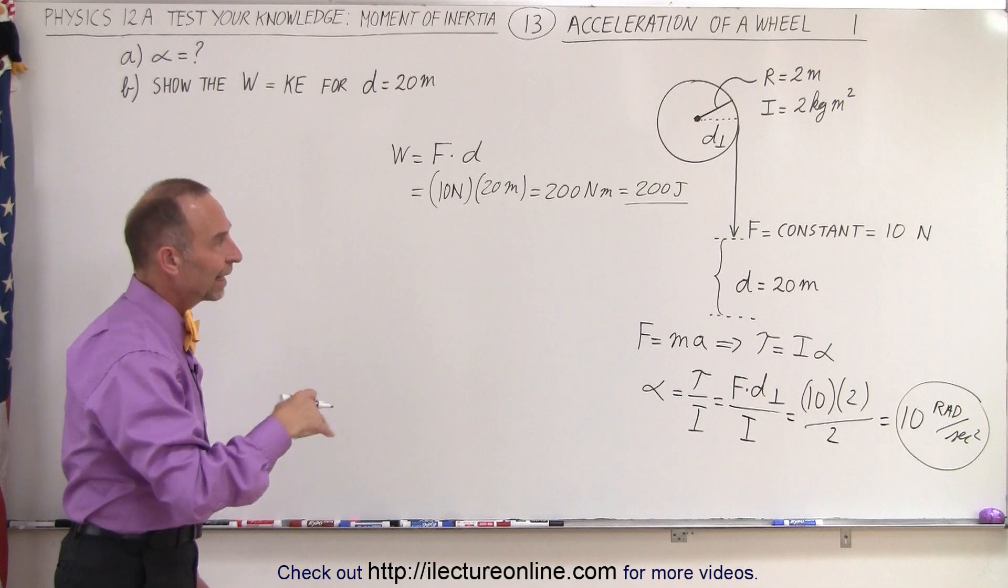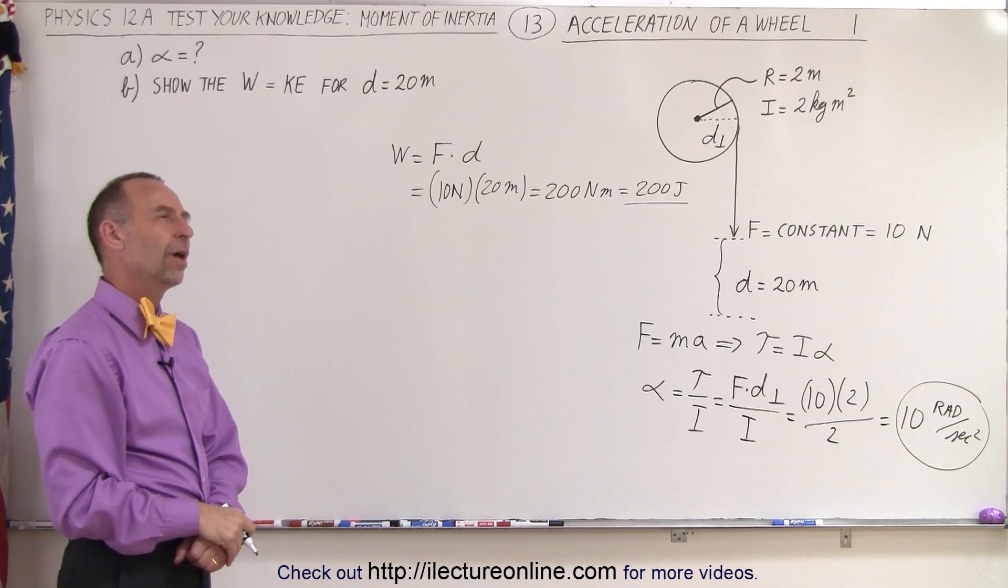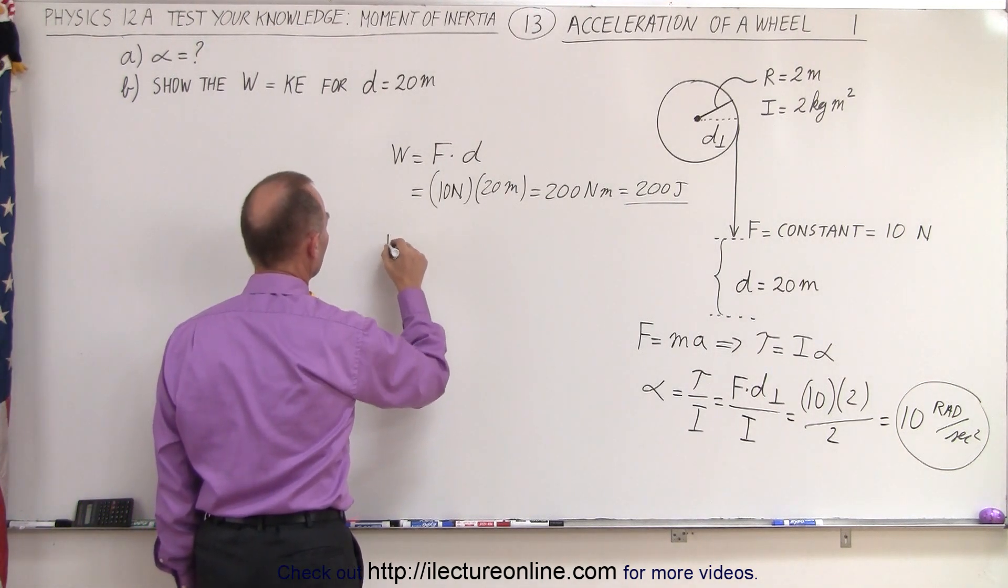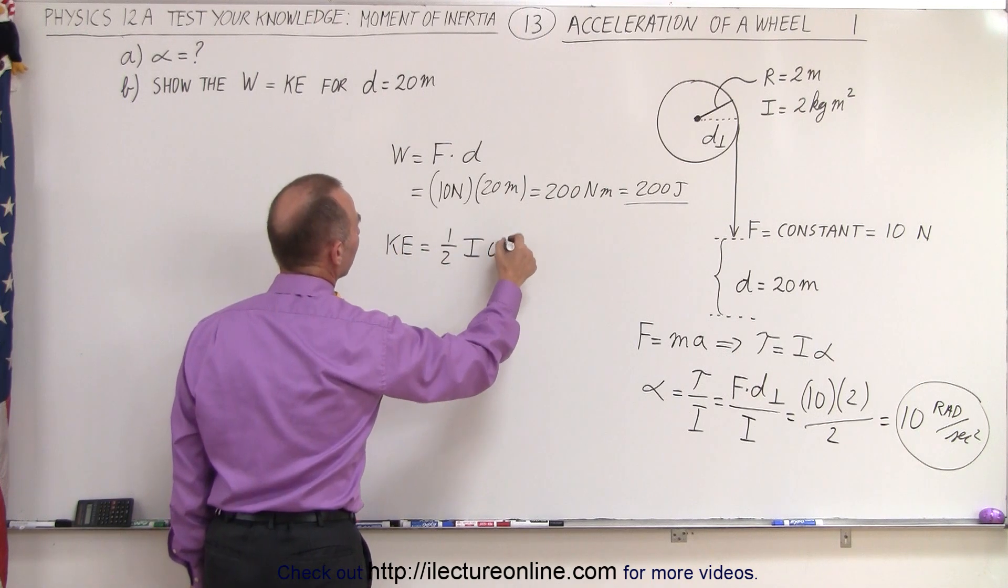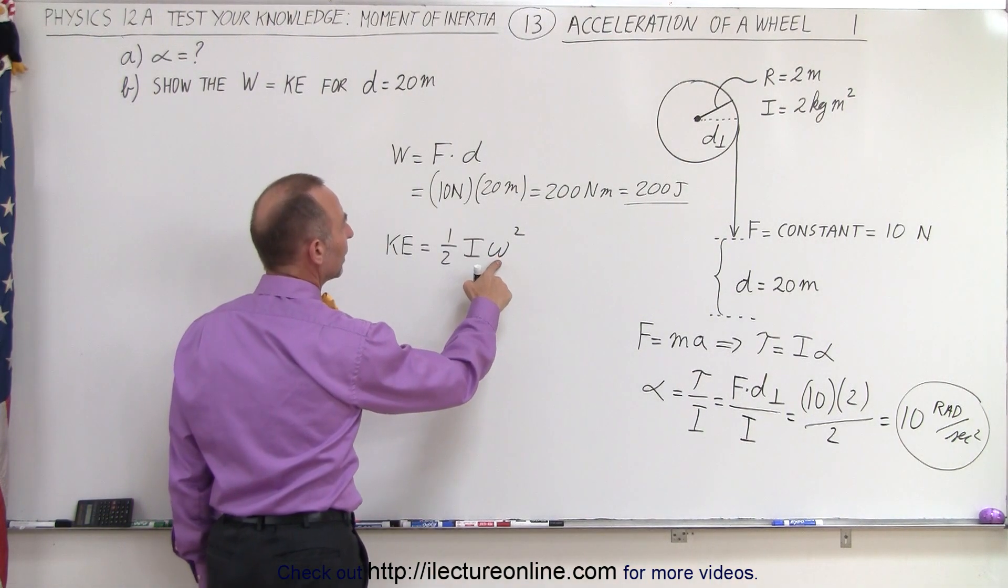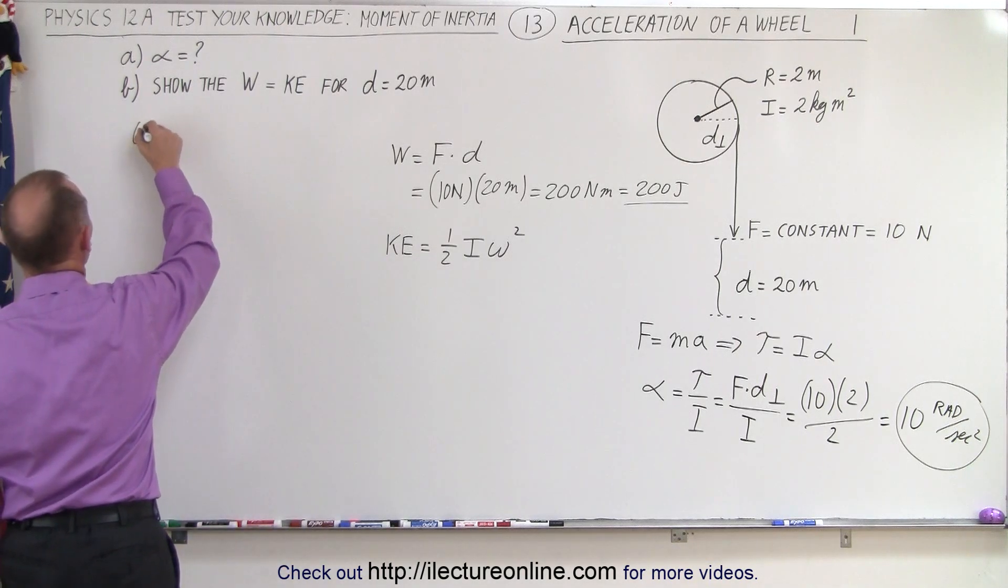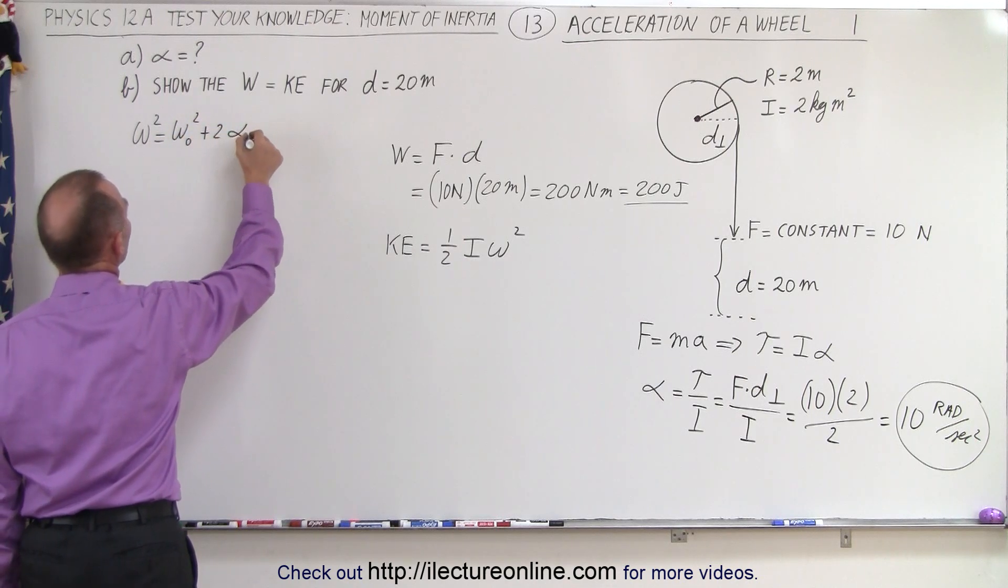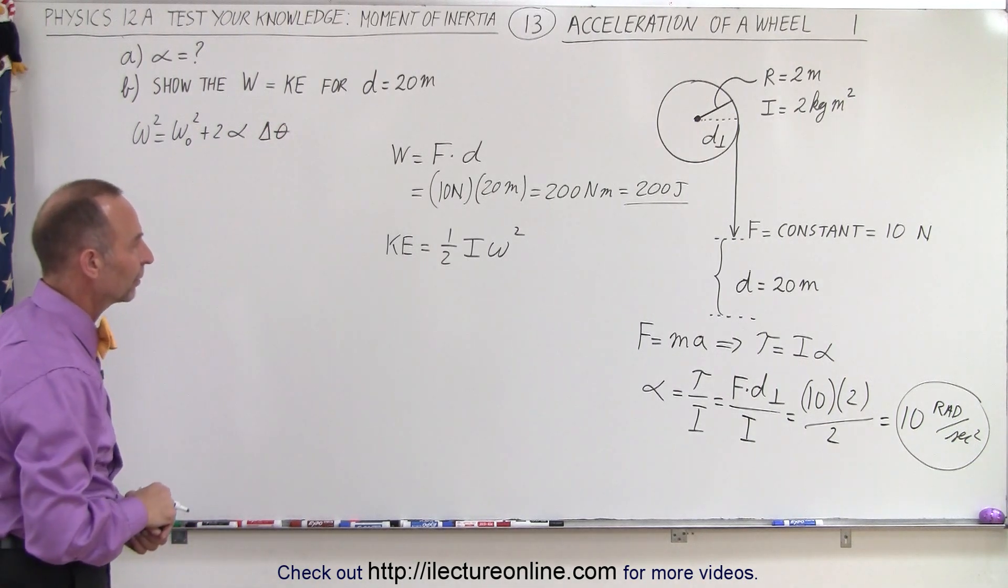So now we want to see if the kinetic energy gained by that wheel is the same 200 joules. So how do we find that? We probably want to use the following. We know that the kinetic energy, the rotational kinetic energy, is equal to one-half I omega squared. To get the omega, we need to use an equation of kinematics. We can use the following: omega squared equals omega initial squared plus two times the angular acceleration times the displacement in radians, delta theta.